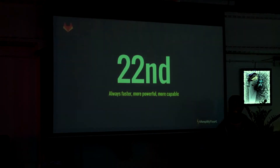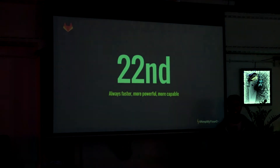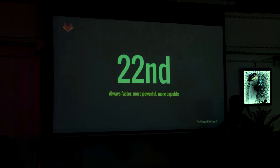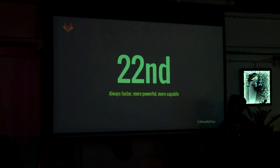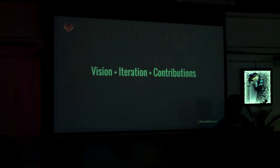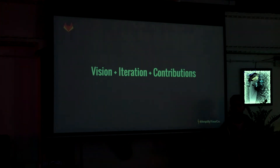Every month we want to make sure that on the 22nd GitLab is actually faster, more capable, with more features, and more powerful, independent of how you're using it. It's not always easy, but this is how we do it: we have a strong vision for GitLab, we use strong iteration, and we have the contributions of the community. I'm going to walk through all those things and tell you how they work.